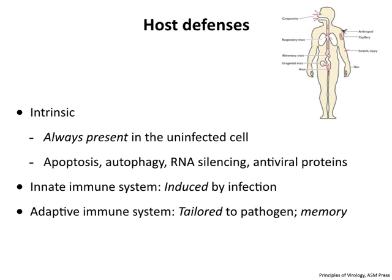This was our introductory slide from the last lecture. We're talking about three different kinds of defenses: intrinsic, which we talked about last time, innate defenses—and you should understand the differences between these—and today we're going to talk about the adaptive immune system. The key is that the adaptive system is tailored to the pathogen; it matches the precise virus. There's memory associated with it. You don't have memory for the innate and intrinsic defenses—they can just be induced, and they act rather broadly.